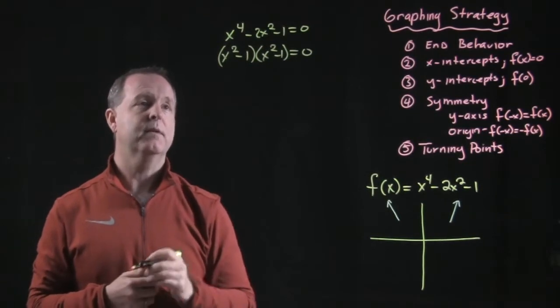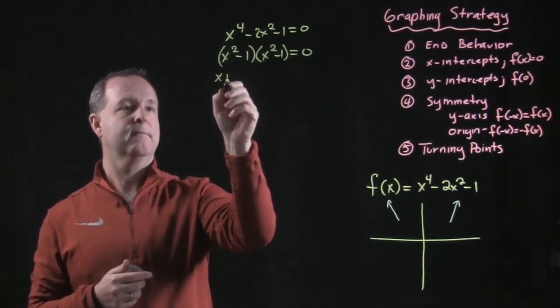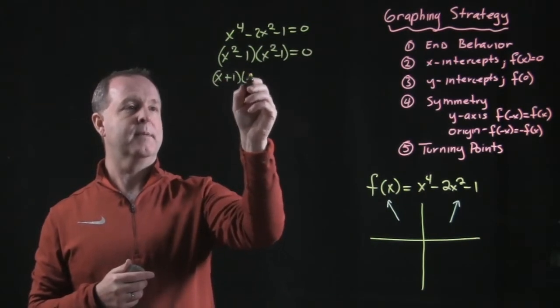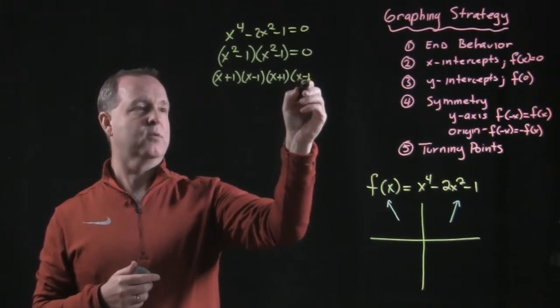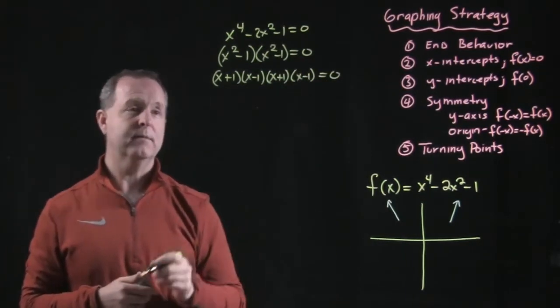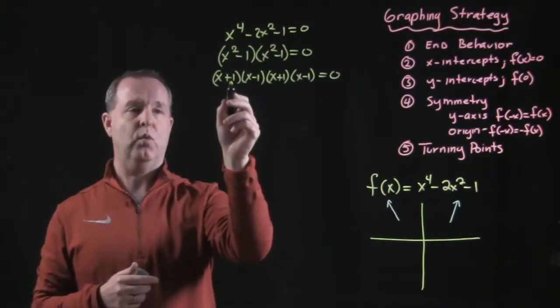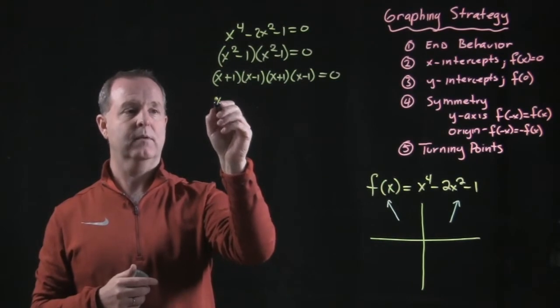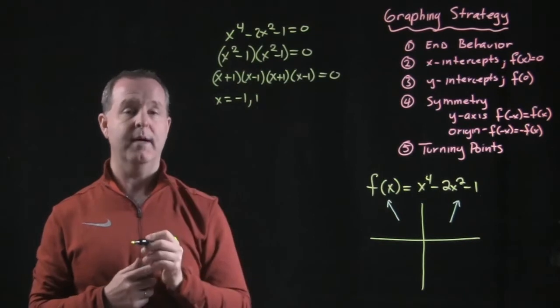For that to be true, well I guess I can still factor this one. This becomes x plus 1, this becomes x minus 1, that's x plus 1, and that's x minus 1. For this to be true, any one of these products has to equal zero. So x plus 1, if that's true, x would equal negative 1. And that second factor, for that to be true, x equals 1.